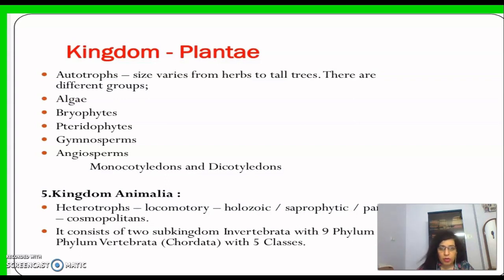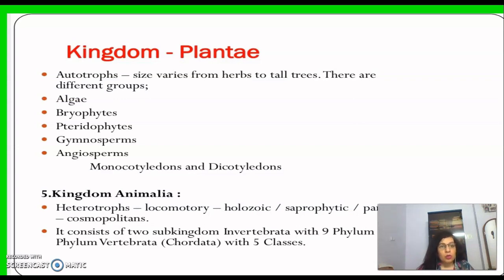Next we talk about Kingdom Plantae, which consists of autotrophs that make their own food. They are classified into five divisions: Algae, Bryophyta, Pteridophyta, Gymnosperms, and Angiosperms. Angiosperms are further divided into monocotyledons and dicotyledons based on seed leaves, which we will study in detail in the next chapter.